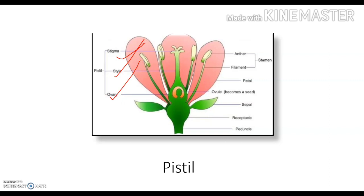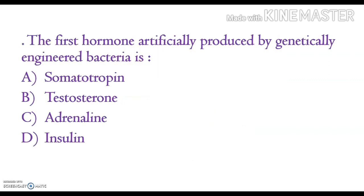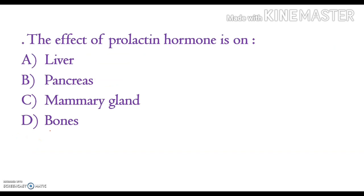The next question: the first hormone artificially produced by genetically engineered bacteria. Options are somatotropin, testosterone, adrenaline, and insulin. The correct answer is option B, insulin.